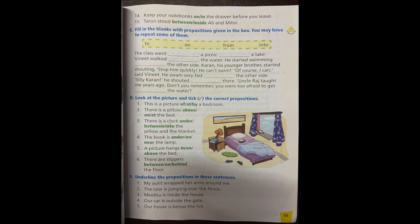Our car is outside the gate. Where is the car? Outside. Underline outside. Our house is below the hill. Below. Underline below.